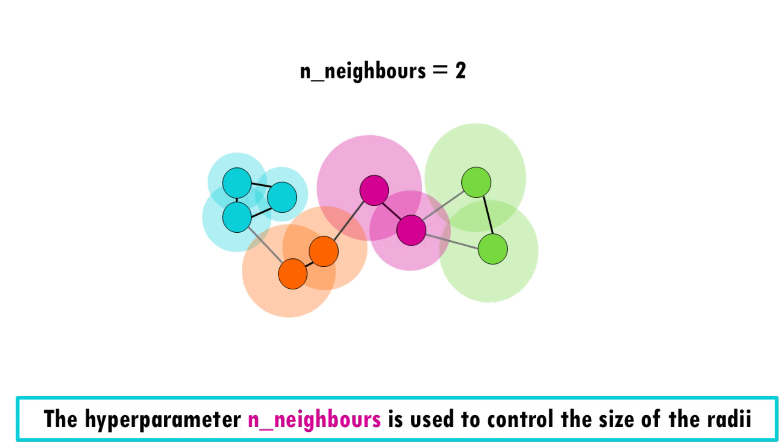So, for example, if you choose two neighbors, the radii would look something like this. If you set n_neighbors to four, it might look like this.